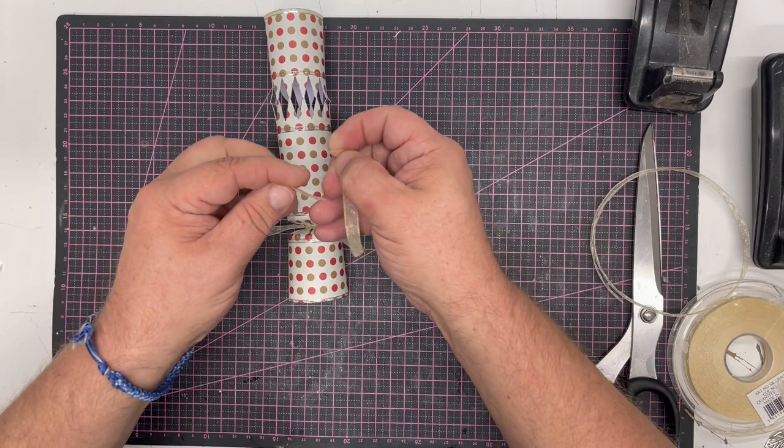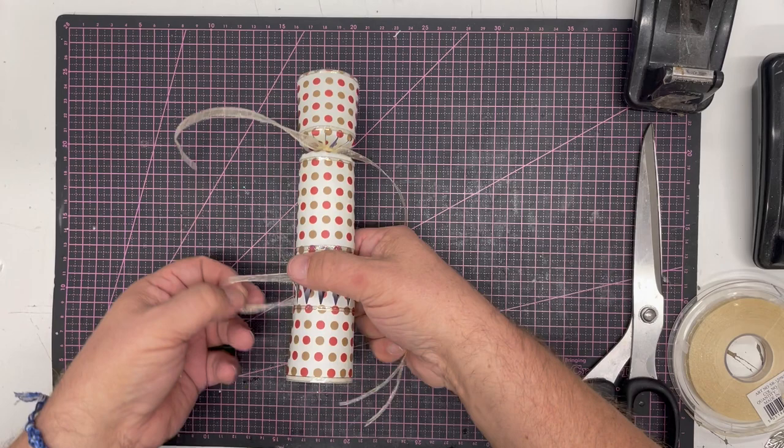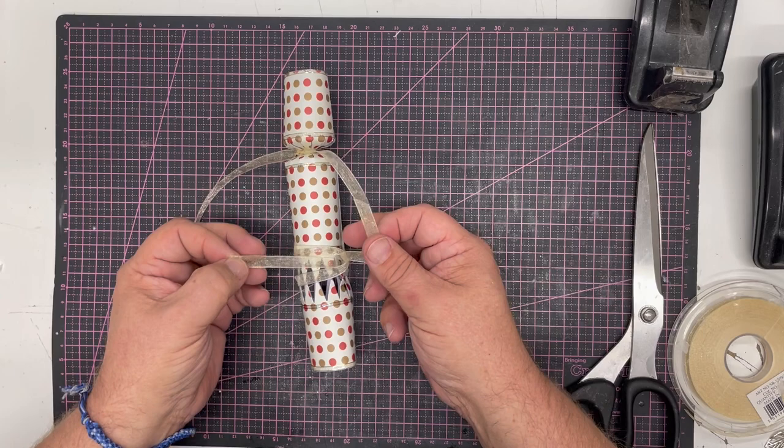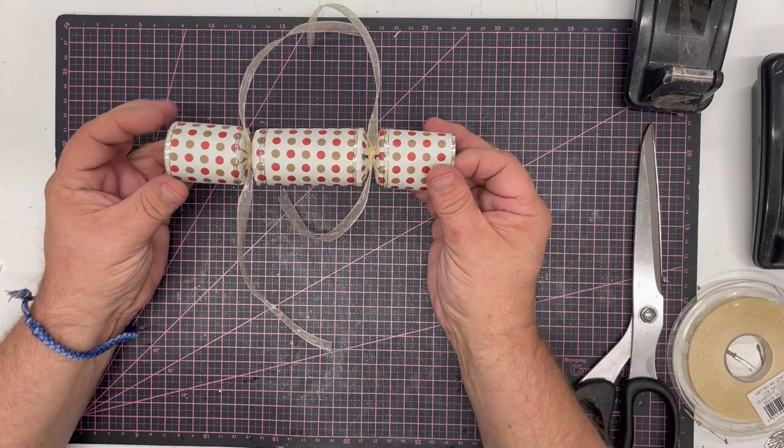And do the same with the other side. Make a loop, fold underneath, push the two ends through and separate the two ends and pull them down. Make sure it's in the middle and then tie off. And there is your mini cracker made really simply, beautifully.